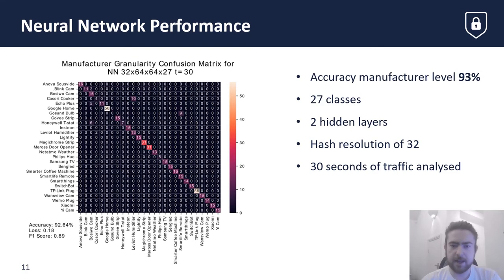When testing the same neural network with identification at a manufacturer level, the accuracy increases to 93%. We observe that particular manufacturers, such as Smart Life, are often predicted with less accuracy than others.